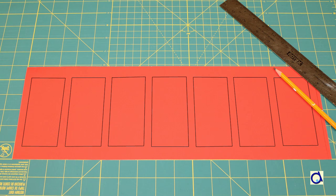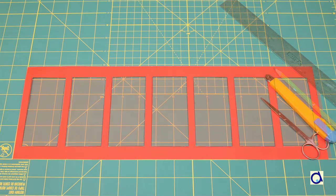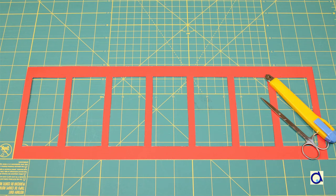Cut openings of the desired shape in the strip of construction paper. In my case, I decided to cut out rectangles, leaving only small edges for maximum brightness. But feel free to create your lantern with the shapes you prefer.